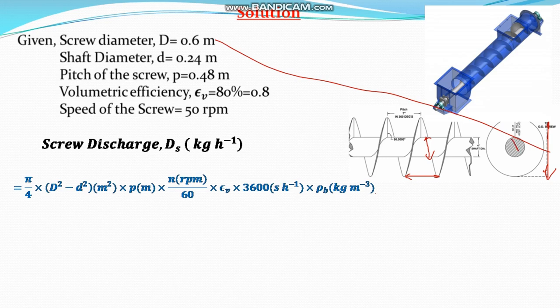If you see the cross section, there is an inner diameter or shaft diameter and there is an outer diameter or which is the screw diameter.